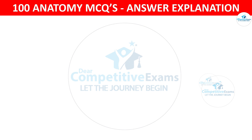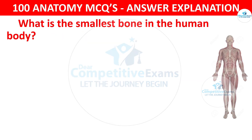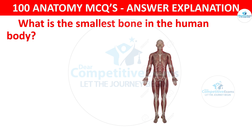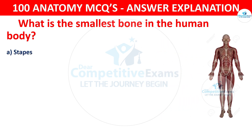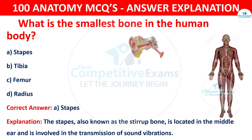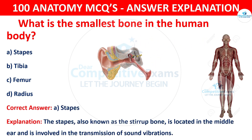Question number 94: What is the smallest bone in the human body? The options are: Stapes, Tibia, Femur, or Radius. The correct answer is A — stapes. The stapes, also known as the stirrup, is located in the middle ear and is involved in the transmission of sound vibrations.